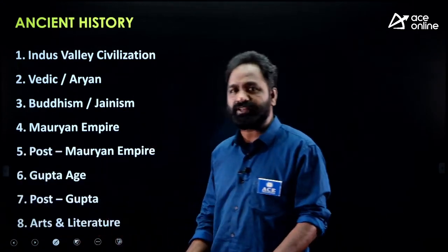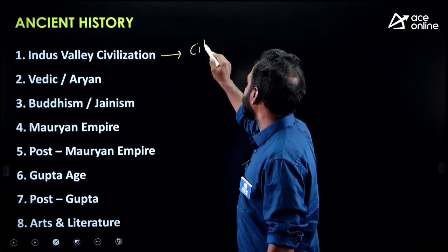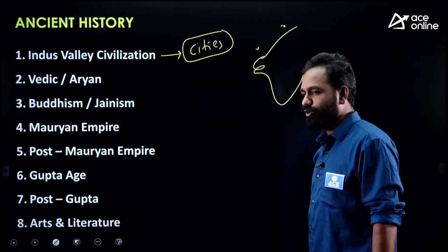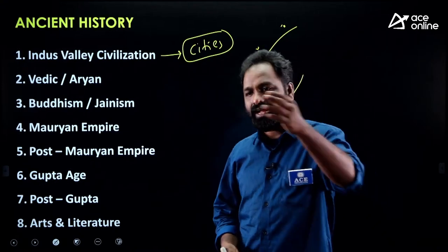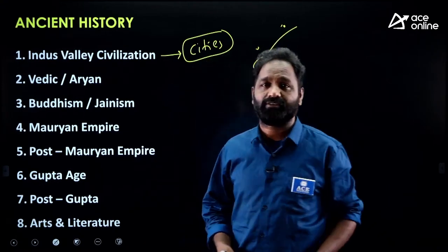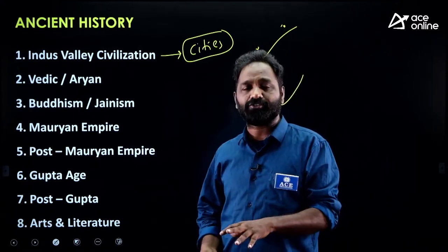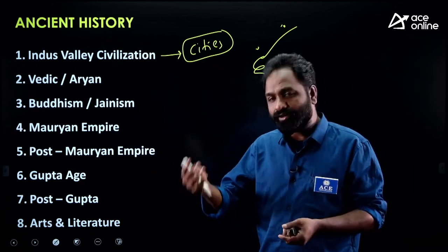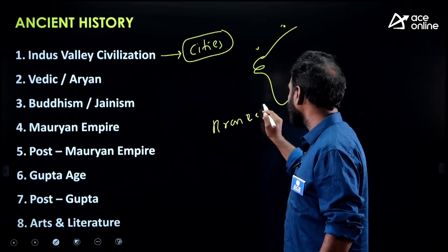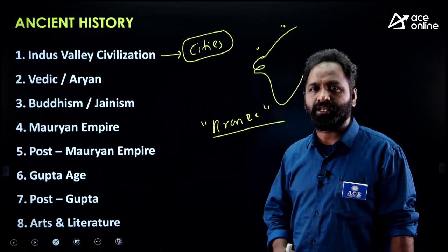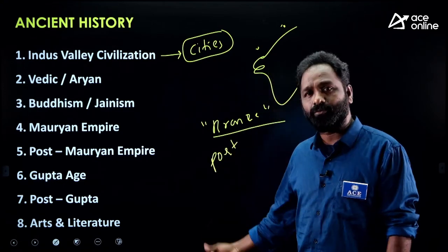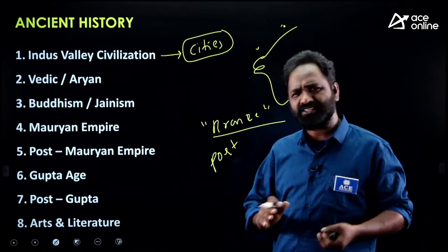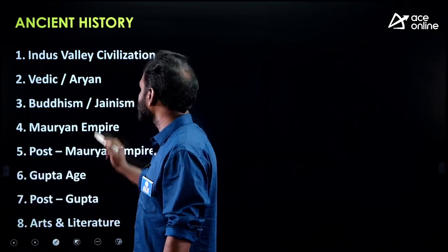From each chapter, how they ask questions is very important. For Indus Valley Civilization, they mainly ask about the cities — Mohenjo-daro, Harappa, Dholavira, Lothal — and on which bank of the river each city was located. They also ask what was found at each archaeological site. For example: where was the bronze dancing girl found? The answer is Mohenjo-daro. Which is a port city of the Indus Valley Civilization?